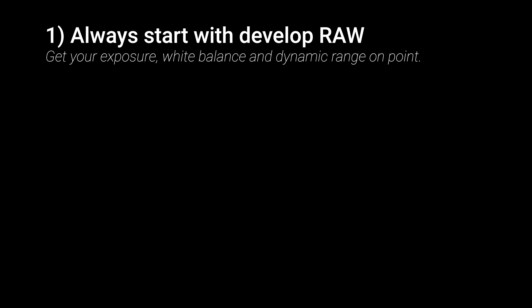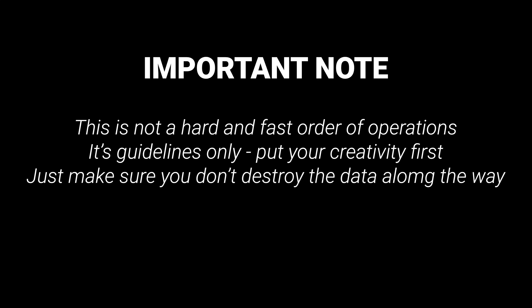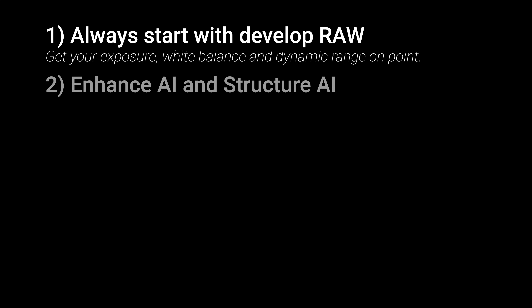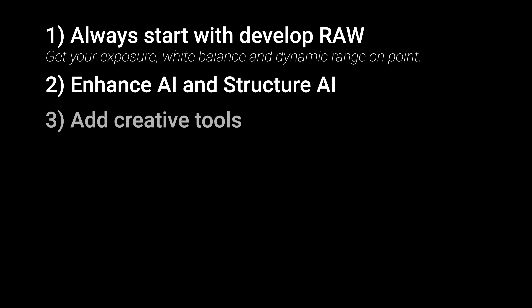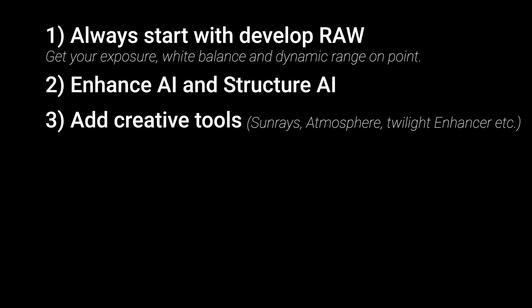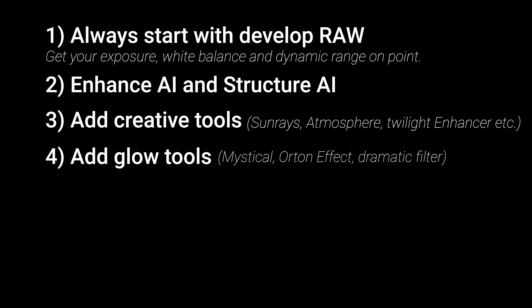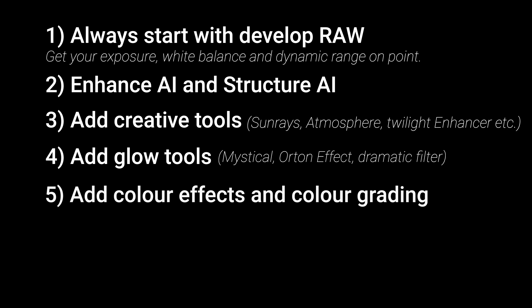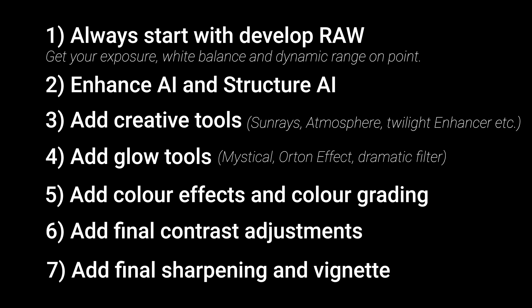So here's my recommendation. Always start with Develop Raw and give your photo a full dynamic range, a correct contrast and a correct white balance. At this point, keep sharpening to a minimum — if you do want to add a bit of Enhance AI or Structure AI, now's the time to do it. Next, look at the creative tools that are adding or changing your pixels, such as Sunrays, Atmosphere AI, Twilight Enhancer. Then if you want to add glow tools or those that soften your photo globally — such as Mystical, the Orton effect, or the Dramatic filter — now is the time to apply those. I recommend keeping the colors in your photo as authentic as possible for as long as possible. For this reason, if you want to desaturate or add color grading through lookup tables or toning, that should be done towards the end of the workflow. Then you can add your final contrast adjustments, a final round of sharpening, and a vignette if you want to add one.